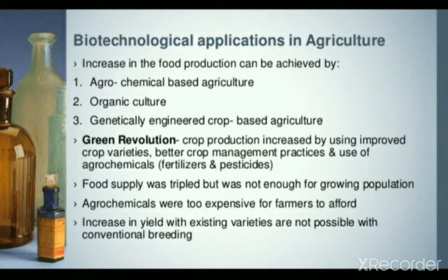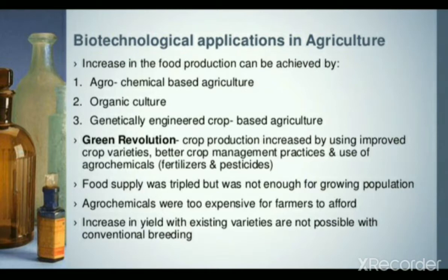Green Revolution — harit kranti — matlab jo bhi cheez hai, harit cheezon ko increase karna, ek tarike se revolution lana, means plant ke cases mein plants ko itna produce karaen ki jo bhi hamari population hai wo un cheezon ko feed kar sake. India mein green revolution ke father ka naam MS Swaminathan ji ko bola jata hai, jinhone india mein green revolution introduce kiya. World ki base se Norman E. Borlaug ye scientist they jinhone crop ke field pe bahut zyada scientific work kiya. Green revolution mein crop ko improve karte hain, crop ki varieties use karte hain, agro chemicals means fertilizer and pesticide ke use se crop ki yielding ko increase karte hain.